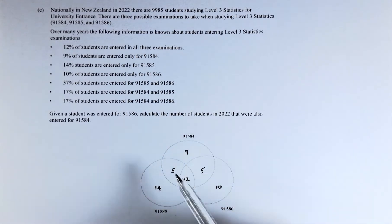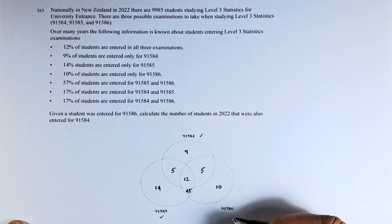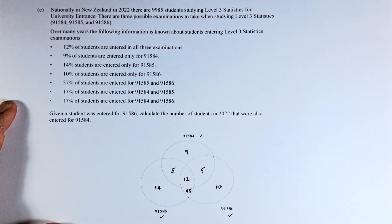So we are going to do a Venn diagram. 91584 is here, 91585 is here, and 91586 is there. Once we have that Venn diagram, we are going to put numbers.